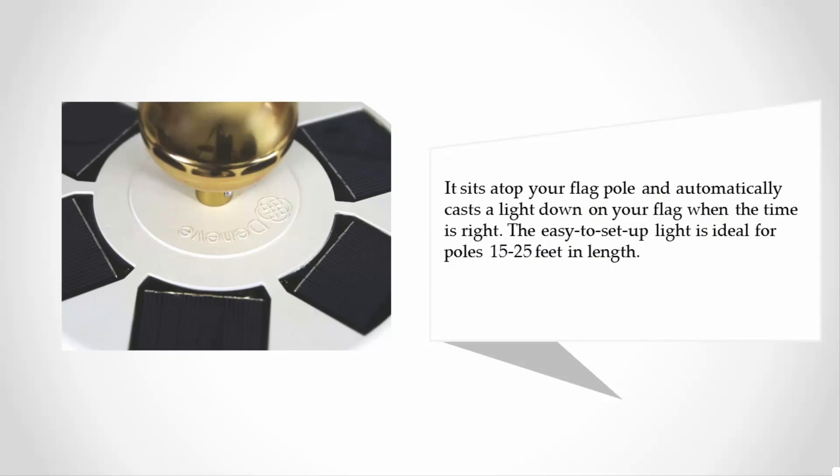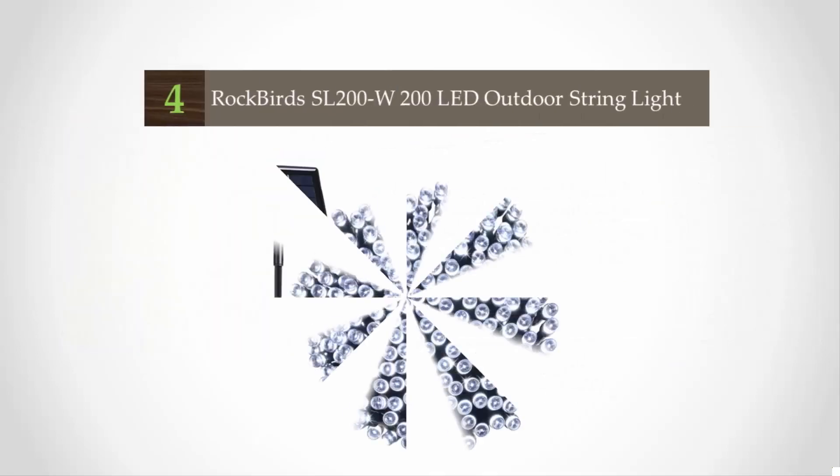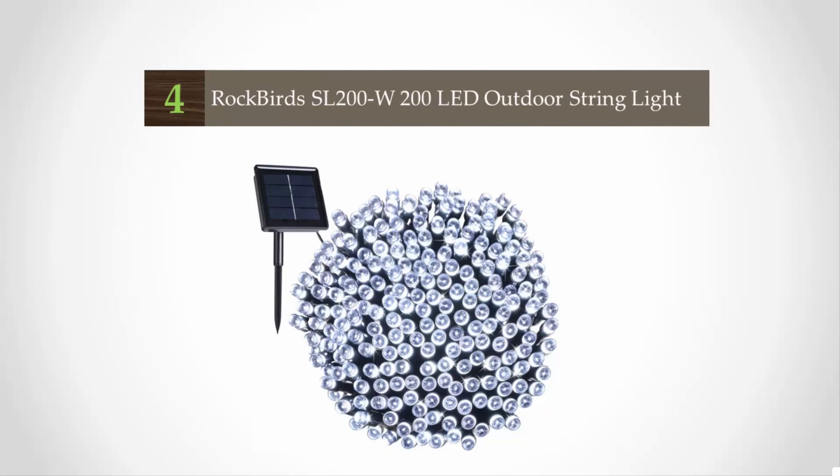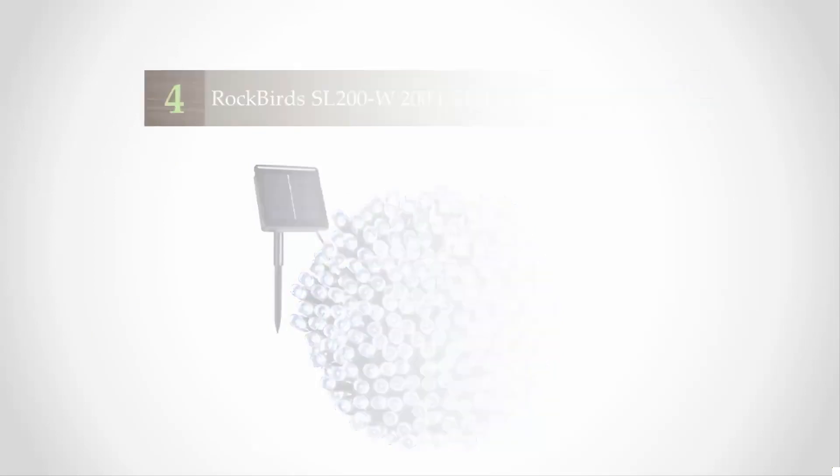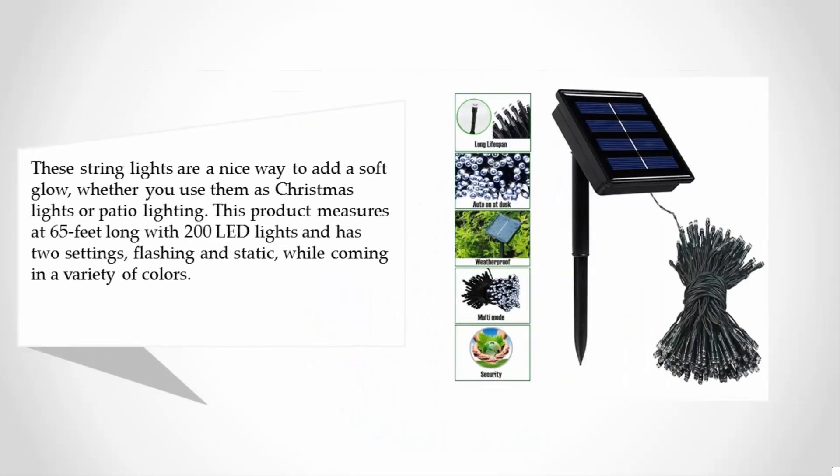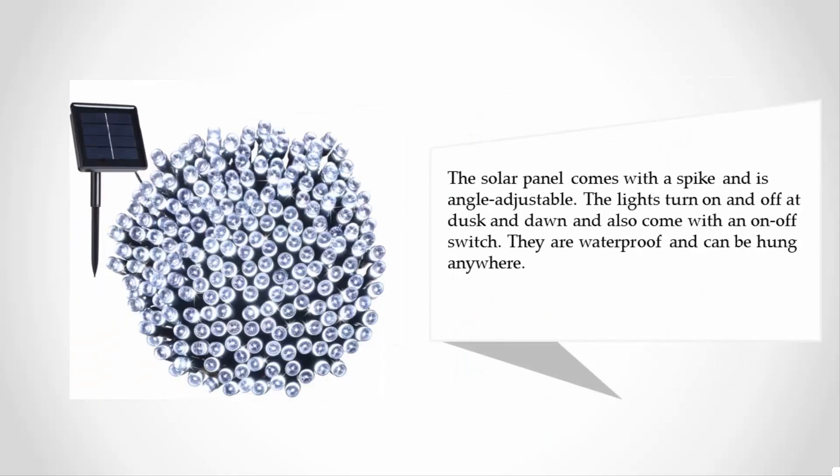At number four, these string lights are a nice way to add a soft glow, whether you use them as Christmas lights or patio lighting. This product measures at 65 feet long with 200 LED lights and has two settings: flashing and static. While coming in a variety of colors, the solar panel comes with a spike and is angle adjustable.